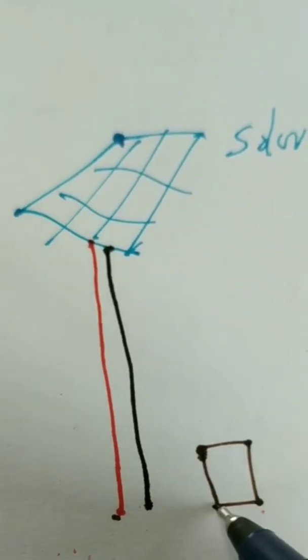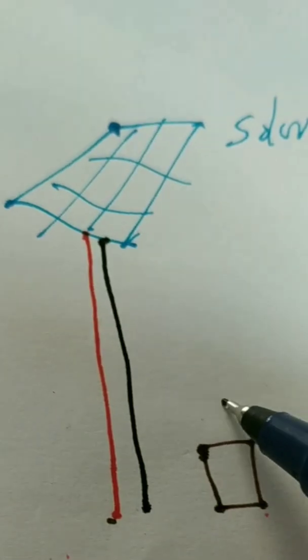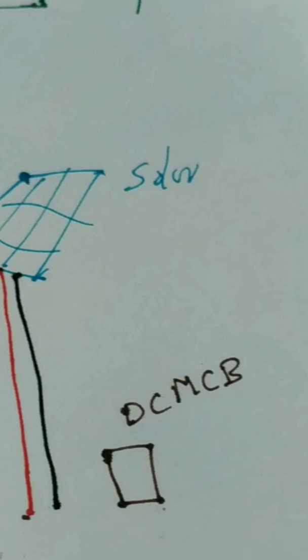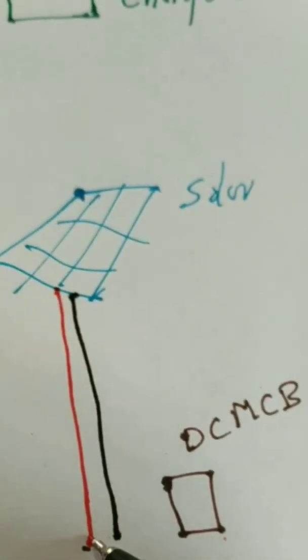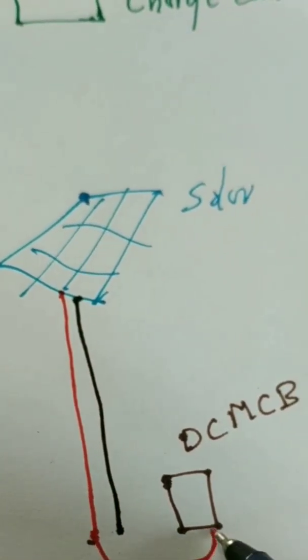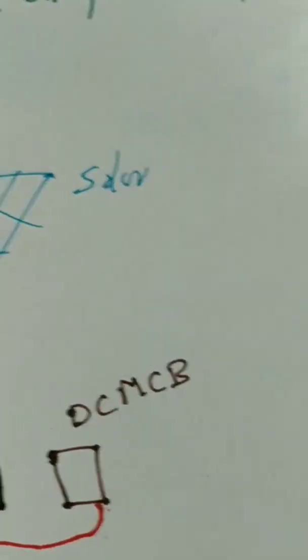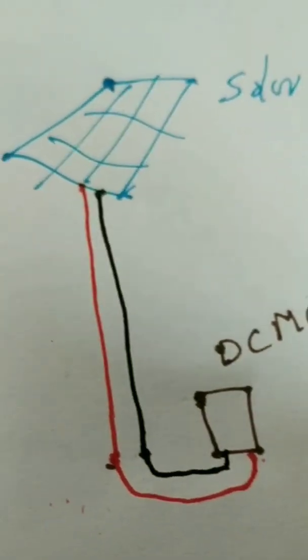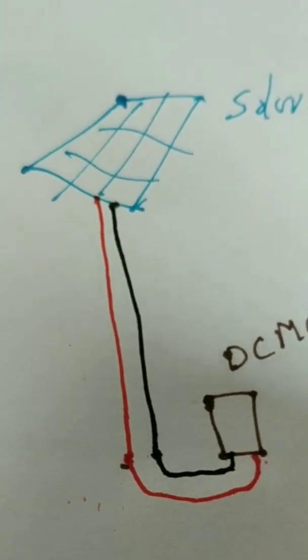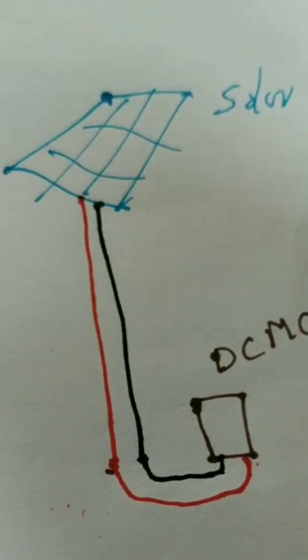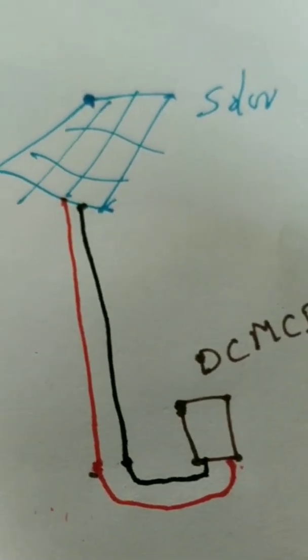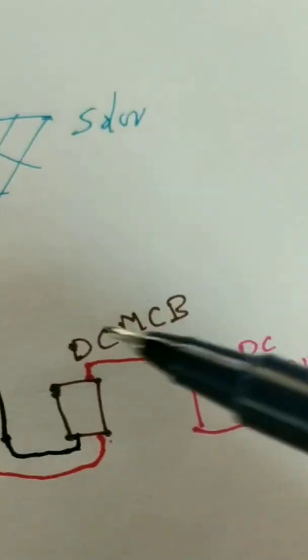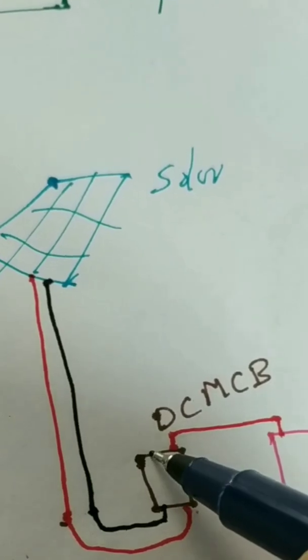I have installed one MCB also. So first, the solar panel positive and negative will be connected to a DC MCB, and from the DC MCB positive and negative will be connected to a surge protection device which is in parallel. And from SPD, positive and negative will go to the inverter, solar inverter, or charge controller.